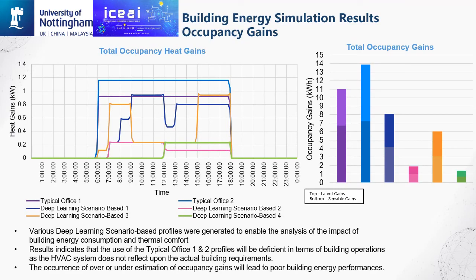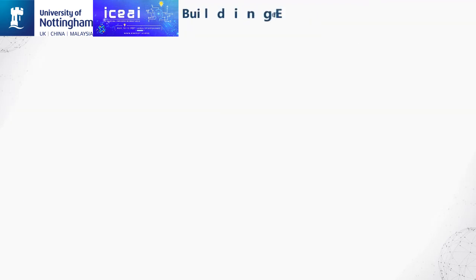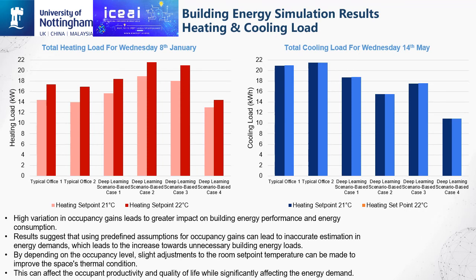The diagrams here show that various deep learning profiles were generated to analyze the impact on building energy consumption and thermal comfort. Results indicated that the use of typical office profiles 1 and 2 would be deficient in building operations, as the HVAC system does not reflect actual building requirements. Over or under estimation of occupancy gains leads to poor building energy performance. Results for predicted heating and cooling loads during typical winter and summer days suggest that using predefined assumptions for occupancy gains can lead to inaccurate energy demand estimation, increasing unnecessary building energy loads. Furthermore, slight adjustments to room set-point temperature based on occupancy level can improve thermal conditions and affect occupant productivity and quality of life while significantly affecting the energy demand of the building.